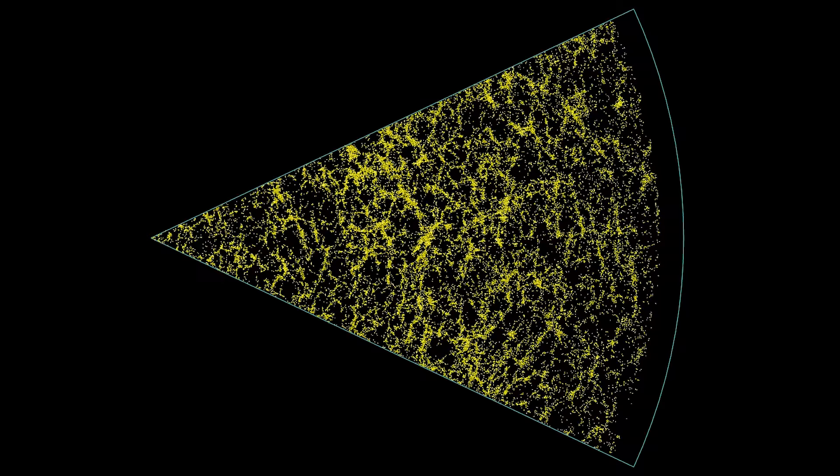In her subsequent maps, like this one, that went way deeper and contained tens of thousands of galaxies, the pattern held. Margaret Geller and her two colleagues had found the continents and oceans of our universe.